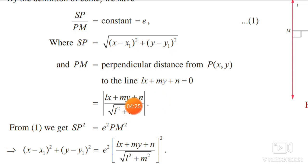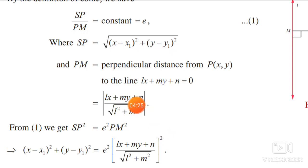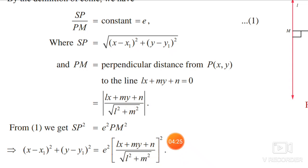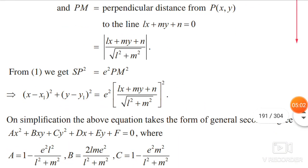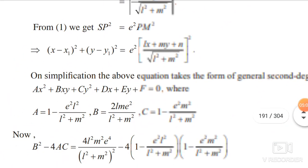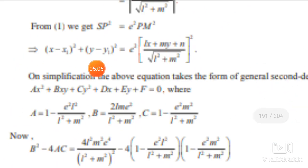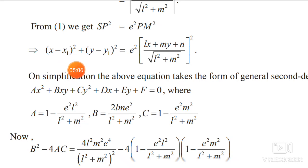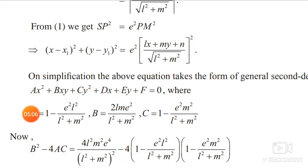PM² is the numerator (lx plus my plus n)² divided by (l² plus m²), since squaring the root of l² plus m² gives l² plus m². The modulus disappears because squaring makes everything positive. This is the expansion from your book — it uses the (a minus b)² formula to expand the left-hand side.